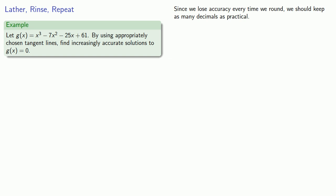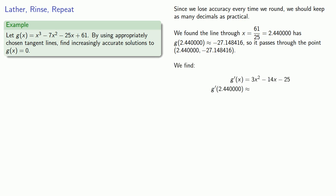Previously, we found the line through x equals 61/25, that's 2.44000, has g(2.44000) approximately equal to negative 27 point mumble. So it passes through this point. Since this is a point on the graph of y equals g(x), we can find the slope of the line tangent to the graph using the derivative. We find the derivative at 2.44000.